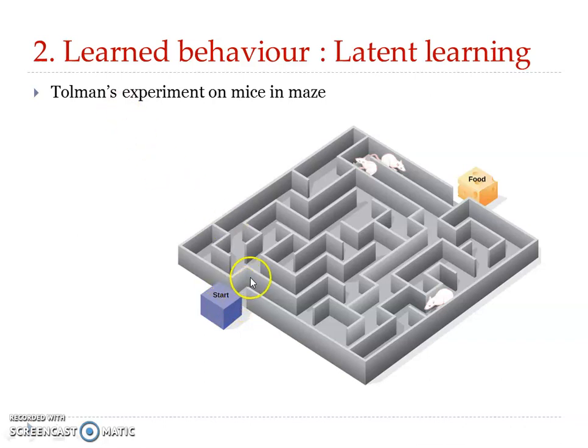As shown in the diagram, the mice were released from a starting point and had to take the right path to reach the food. Since the hungry rats had already become acquainted with the maze, they could easily find their way out. On the other hand, if the animal had not been given the opportunity to explore the maze previously, it would not have reached the food so quickly. So the learning during the previous exploration had remained latent and helped the animal later to find the food. Latent learning thus involves an animal using experience gained at one time in the modification of behavior at a much later time.